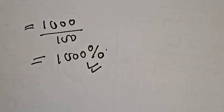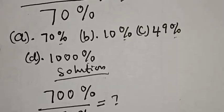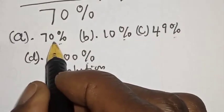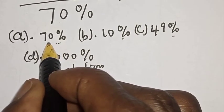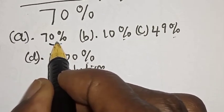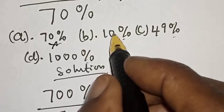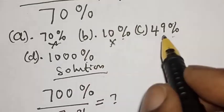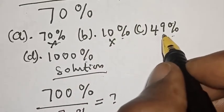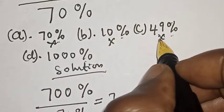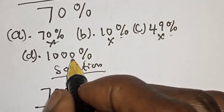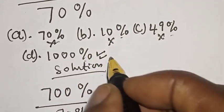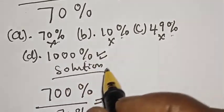This is our final answer. Let's see the options. Option A is equal to 70% — no. Option B is 10% — no. C is 49% — no. And D is 1000% — yes. This is our correct answer.